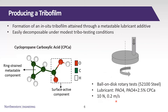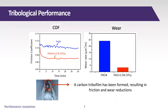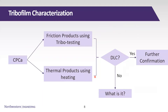Under a normal load of 10 Newtons and linear speed of set meters per second, both friction and wear reductions are achieved after introduction of the lubricant additive in the base oil. At the end of tribotesting, there is also a black deposit accumulated on the trailing edge of the wear scar, which is the carbon tribofilm. Going into the next objective of tribofilm characterization, this was the roadmap we followed: using CPCA, we obtained a friction product from the tribological testing, and also a thermal product from CPCA, then examined both products to ask whether they are actually DLC, and if not, what are they.